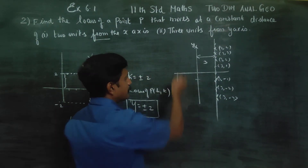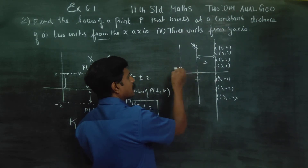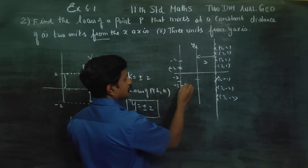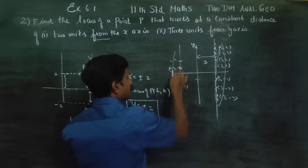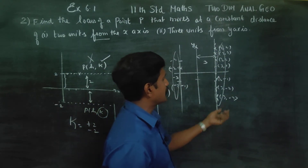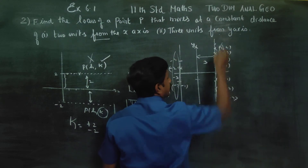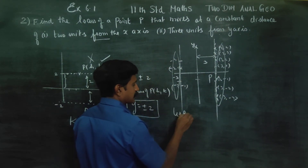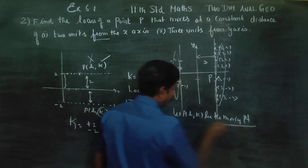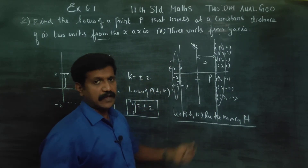Or on the other side, minus three — distance three. Here is the point at minus three. x is constant at 3 units from the y-axis. In the moving point, let p, k be the moving point. The common idea is this: h is equal to plus or minus 3.